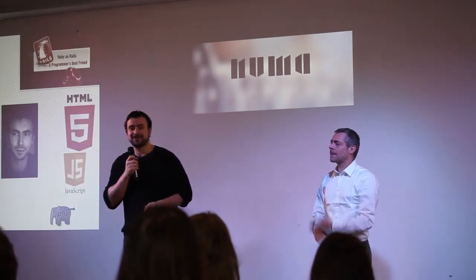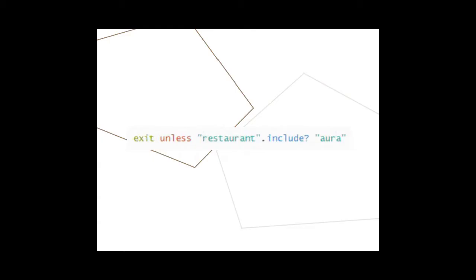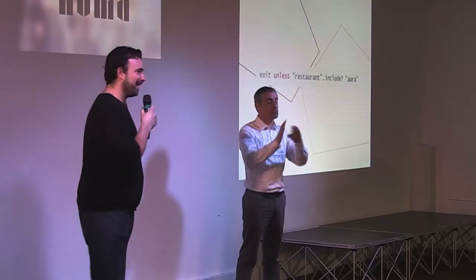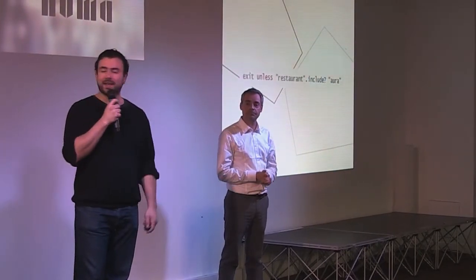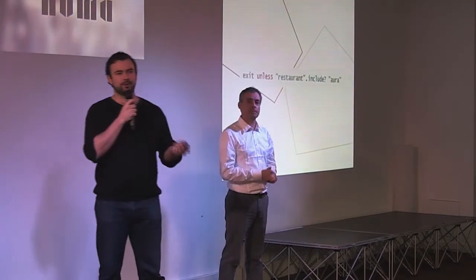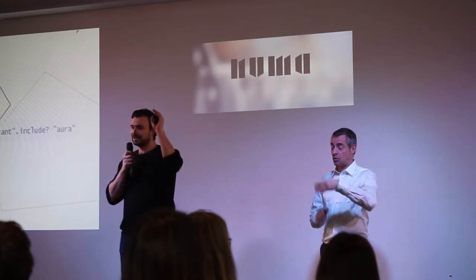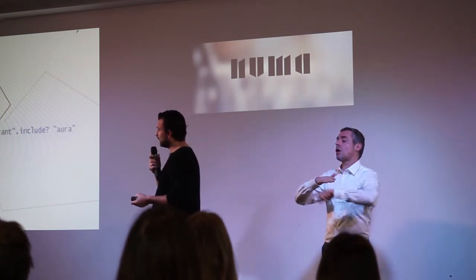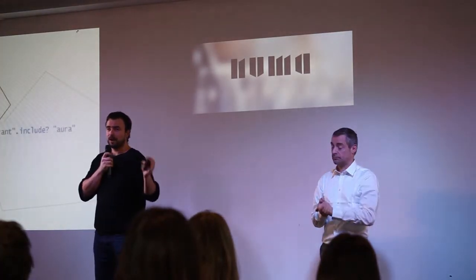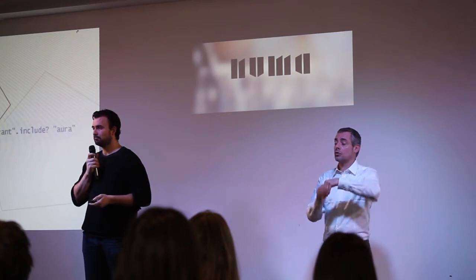Avant tout, j'aimerais bien qu'une personne dans cette salle lise cette ligne de code à voix haute. Qui se dévoue ? Allez, c'est le matin, Creative Morning. « Exit, unless restaurant, include aura. » En anglais, juste en mode : Exit, unless restaurant, include aura. On est loin des 0 et des 1 qu'on imagine, comme dans la matrice, ce langage binaire indéchiffrable, hyper abstrait. Ça, c'est du Ruby, un langage de programmation qui dit à un programme : sors, à moins que le mot restaurant n'inclue Aura. On est très proche du langage humain.